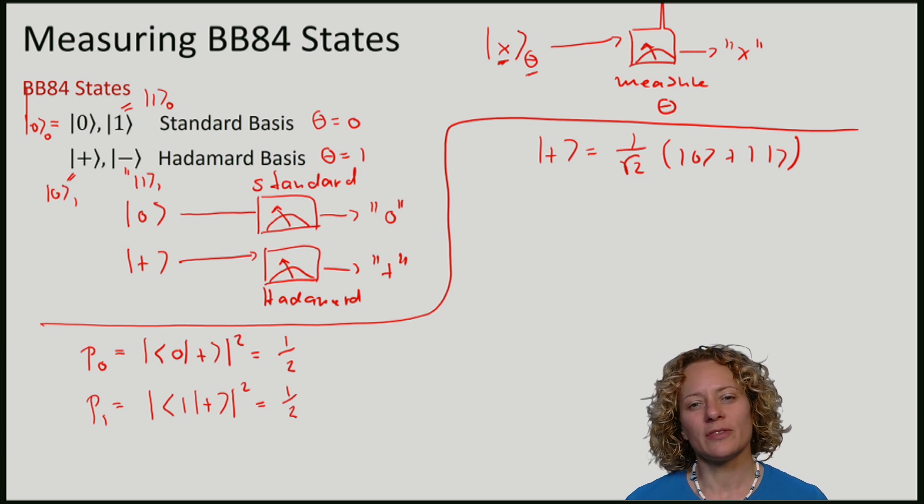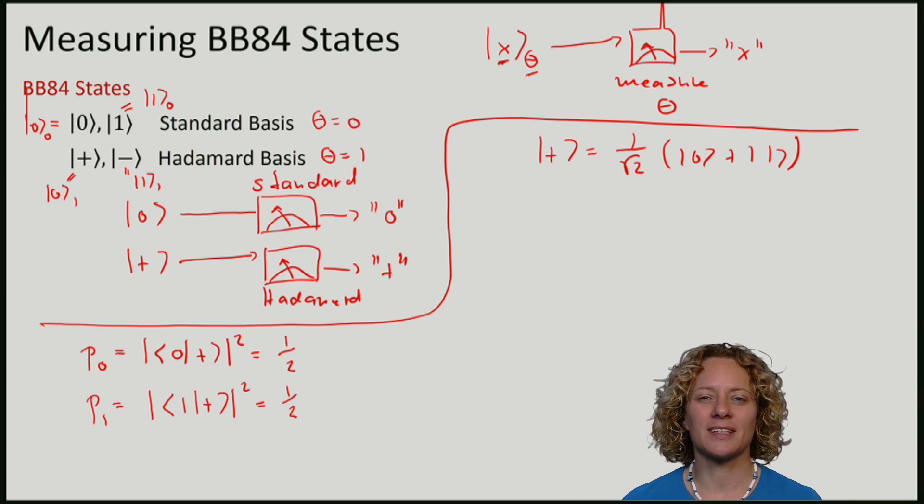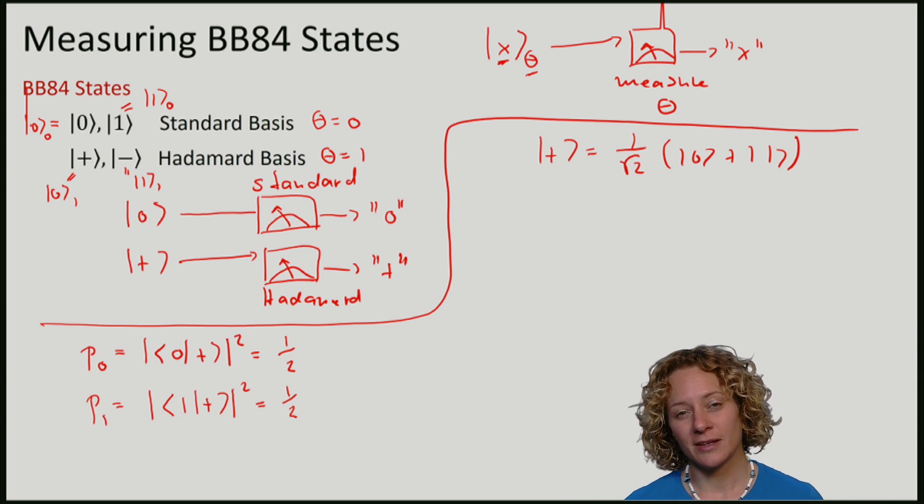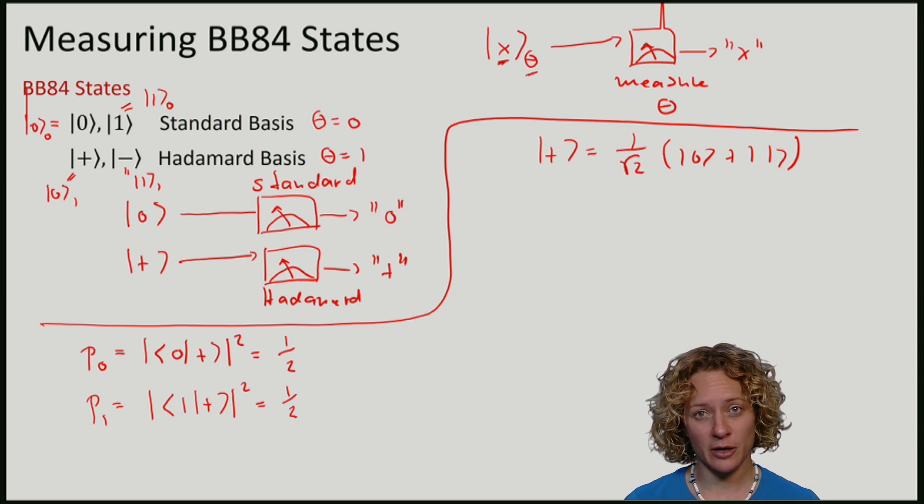So if I prepare a state in one basis but measure in the other, both outcomes occur with equal probability. The interesting case for the protocol is that if I measure in the same basis as I prepared in, I get the same outcome. If I measure in a different basis, I get a random outcome.